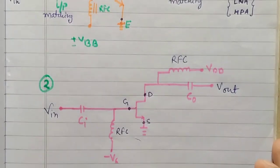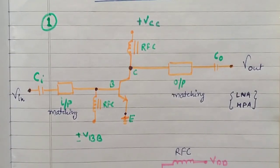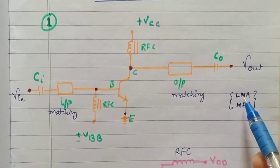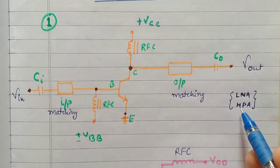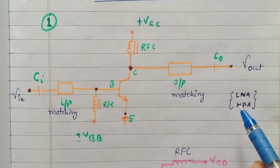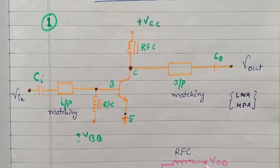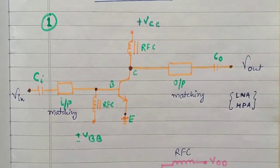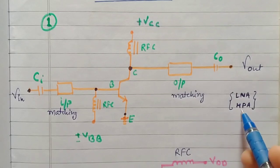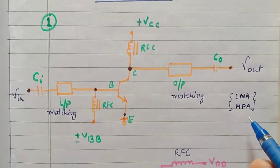When using a BJT to design an amplifier, there are two types: the low noise amplifier (LNA) and the high power amplifier (HPA). The LNA is used at the receiver terminal, while the HPA is used at the transmitting terminal. When transmitting a signal via antenna and the antenna gain is insufficient, we need a high power amplifier to maximize gain so we can transmit the signal over a larger distance.